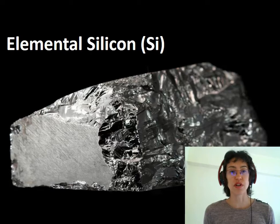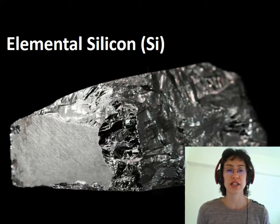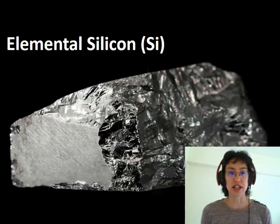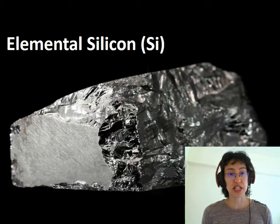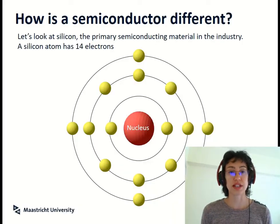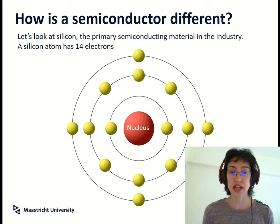Here you can see a photo of elemental or pure silicon. You can see that it's shiny and looks like a metal, but actually its properties are very different. Silicon, symbol Si, has 14 electrons. Let's have a look at what that looks like.